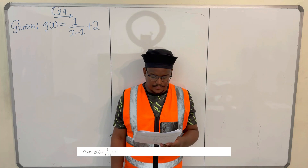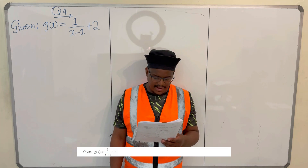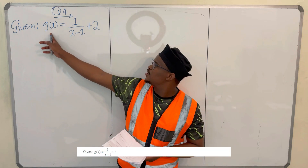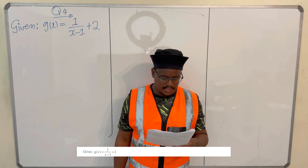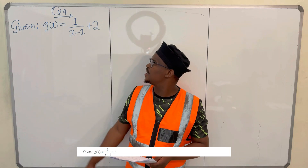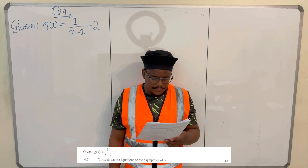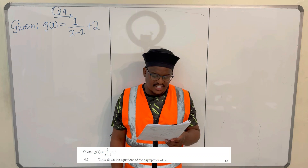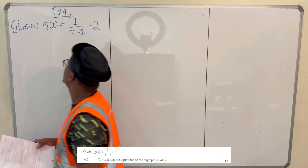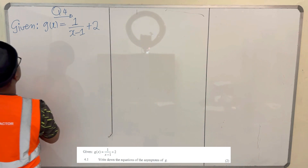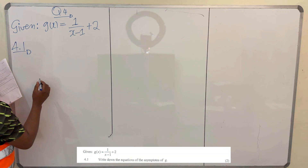Question 4. Given g(x) is equal to 1 over x minus 1 plus 2. We are given that g(x) is equal to this. They are saying: write down the equations of the asymptotes of g. So they want us to show where the asymptotes of g are. This is for point 4.1 — they want the equations of the asymptotes.